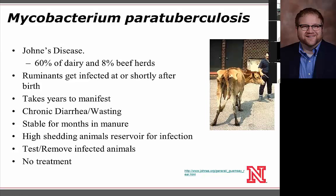Mycobacterium paratuberculosis is a bacterium that causes Johne's disease, an important bovine pathogen present on about 60 percent of dairy farms and approximately 8 percent of beef herds. Ruminants including sheep, goats, and cattle can become infected at birth by ingesting the pathogen from the environment. After infection, the disease can take five to six years to develop, at which point animals develop chronic diarrhea and a wasting syndrome, shedding high amounts of bacteria. The pathogen is stable in manure for months, and the main management strategy is testing and removing infected animals, as there is no treatment.